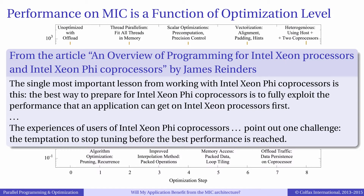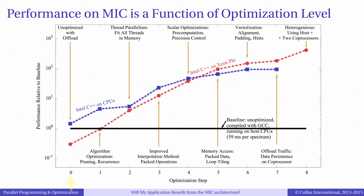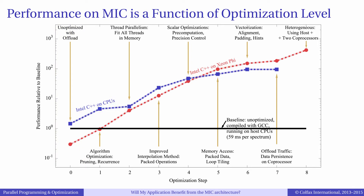Indeed, other accelerator technologies usually require platform-specific programming and optimization. Intel's James Reinders, senior engineer and educator for parallel programming, has expressed it this way: 'The single most important lesson from working with Intel Xeon Phi coprocessors is this — the best way to prepare for Intel Xeon Phi coprocessors is to fully exploit the performance that an application can get on Intel Xeon processors first.' This plot shows the optimization timeline. The x-axis shows the different optimization techniques applied in steps. The y-axis shows the logarithm of performance relative to the unoptimized original code compiled with GCC, which is represented by the black line. Note that step 0 is also the original unoptimized code, but compiled with Intel compiler. Optimizations applied here include algorithmic optimizations, which reduce the number of operations, and optimizations that make the workload utilize the hardware capabilities of the coprocessors more efficiently.